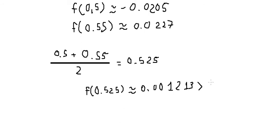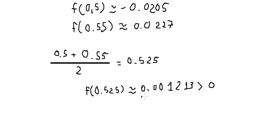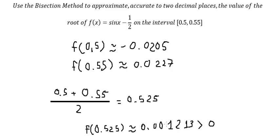Since f(0.525) is positive, we replace the right endpoint with 0.525. The rule is: if the result is positive, we replace the positive-side endpoint with the new midpoint. If the result is negative, we replace the left endpoint.